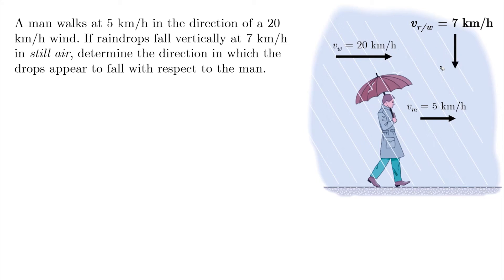And the question is asking only for the direction in which the drops appear to fall with respect to the man. So rain with respect to the man. So we need to find Vr relative to M and then find its direction. And to find Vr relative to M, we need to find Vr and Vm.